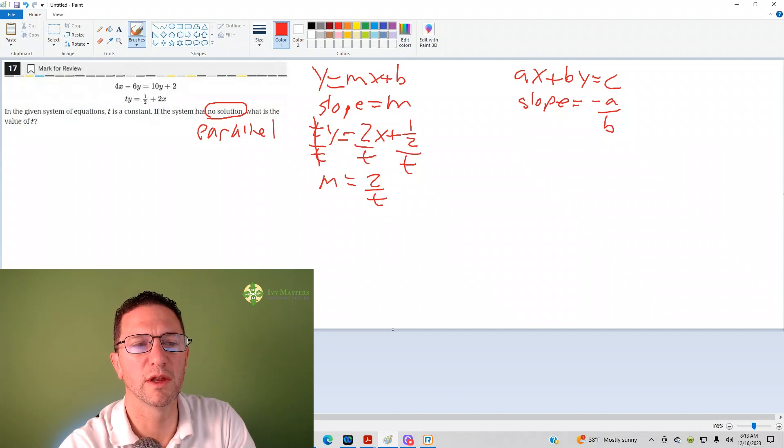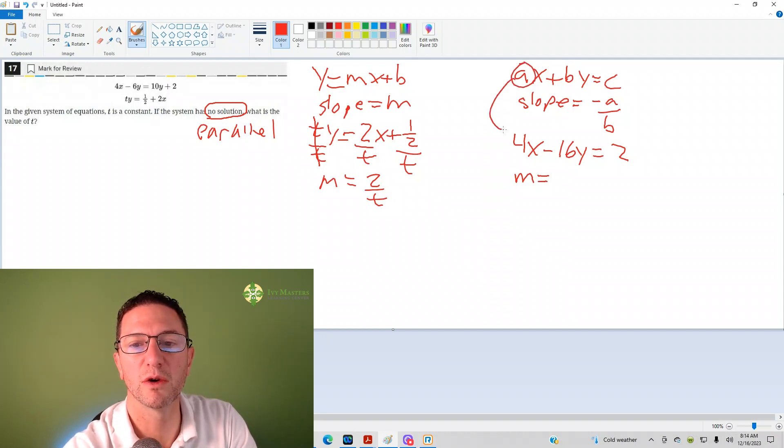Now, the other equation looks a little more like it's in the form ax plus by equals c. So if I subtract 10y from both sides, what I get is 4x minus 16y equals 2. Then if I did my negative a over b, my slope would equal, my a is 4, you can see the a corresponds with 4. So it would be negative 4, negative a over b.